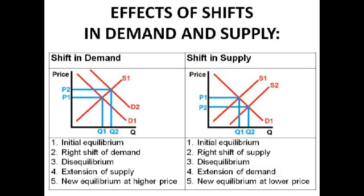Now looking at the effects of shifts in demand and supply: if there's a shift of the demand curve from D1 to D2, the initial equilibrium turns to a disequilibrium because there's more demand than supply. There will be a short period of disequilibrium and excess demand, but then there should be an extension of supply, leading to a new equilibrium at a higher price.